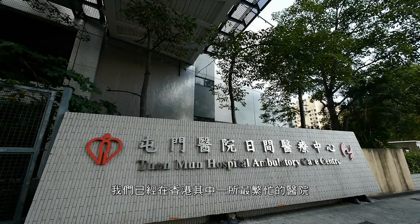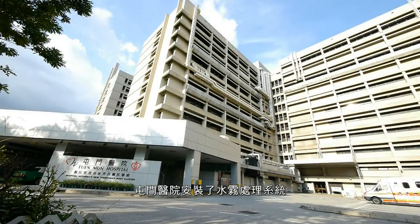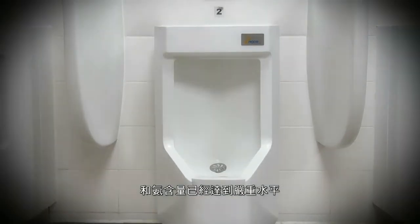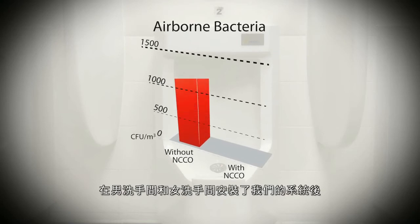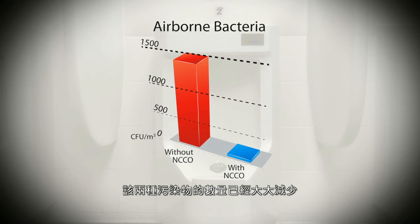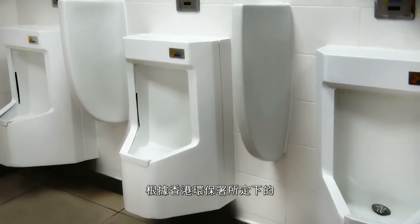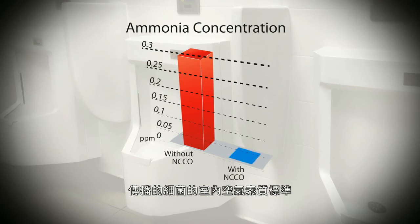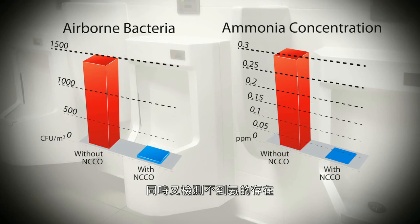We have already installed the NCCO toilet system into Moon Hospital, which is one of the busiest hospitals in Hong Kong. Before the installation of our system, elevated levels of bacteria and ammonia in the air of the public toilet space had reached critical levels. After the installation of our system in both male and female washrooms, the amounts of both pollutants decreased significantly. The air quality inside the toilet has been qualified as excellent class according to the indoor air quality for airborne bacteria suggested by the Hong Kong Environmental Protection Department, which is a standard applied in offices. At the same time, no ammonia could be detected. This demonstrates the powerfulness and effectiveness of our NCCO unit.